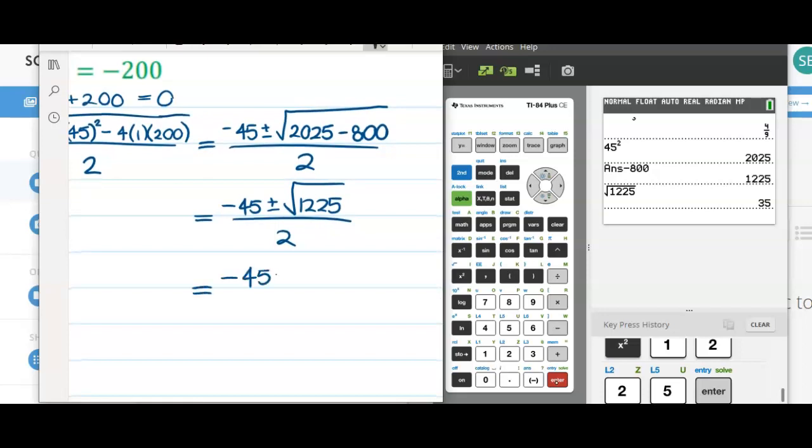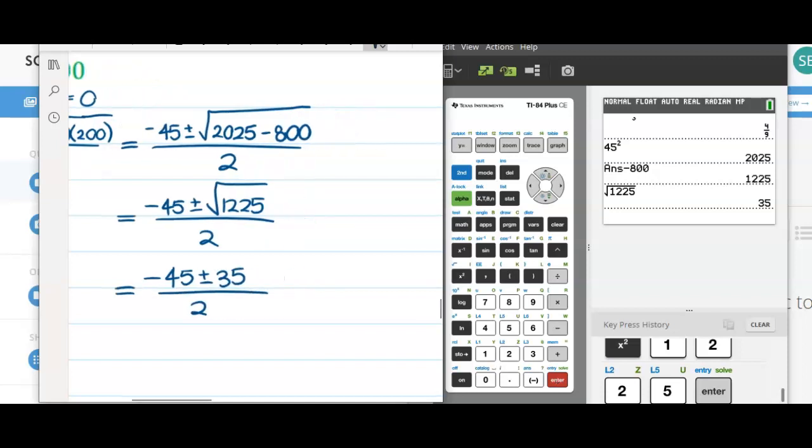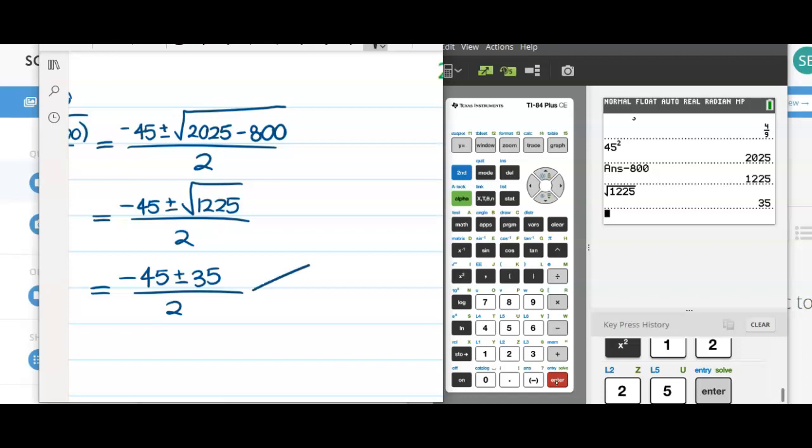Negative 45 plus or minus 35 divided by 2. At this point, we are ready to break into our two solutions.